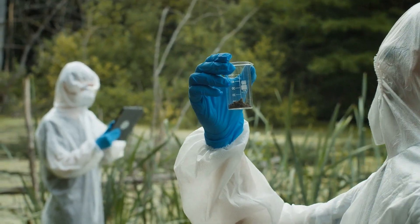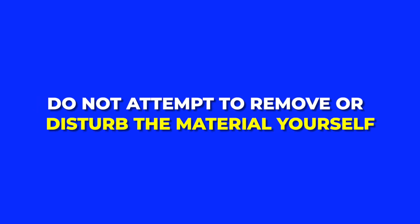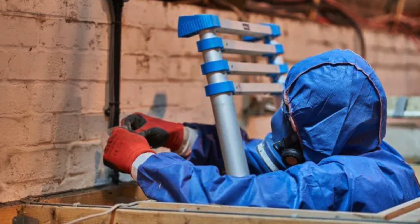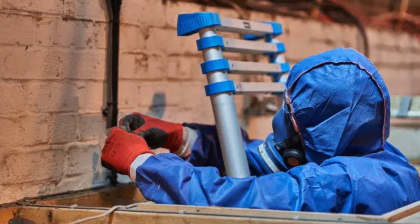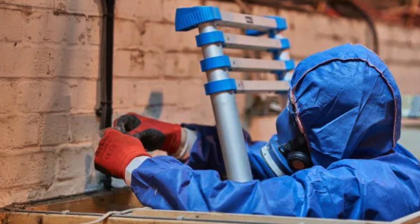To be certain, you need to conduct a laboratory test. The most reliable method is to take a sample and send it to an accredited lab for analysis. If you suspect asbestos in plaster, do not attempt to remove or disturb the material yourself. Disturbing asbestos can release harmful fibers into the air, which are dangerous to inhale.